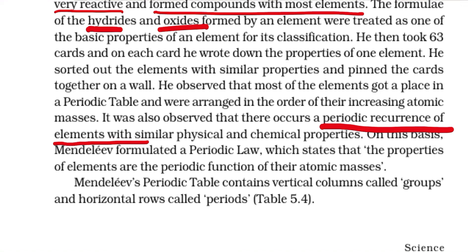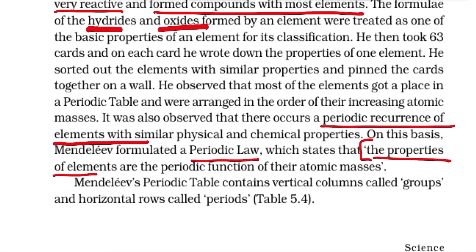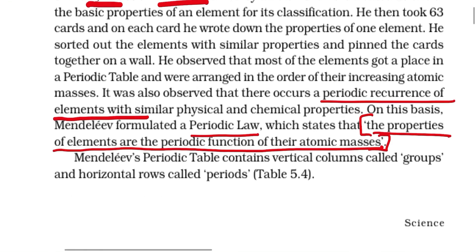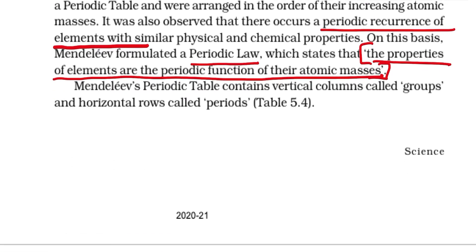Periodic recurrence means a systematic, step-by-step repetition of any property. On this basis, Mendeleev formulated the periodic law, which states that the properties of elements are periodic functions of their atomic masses. Periodic functions means the properties keep repeating with constancy according to atomic masses — as atomic mass increases, properties also increase in a definite pattern.